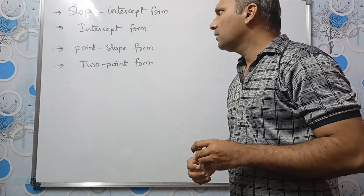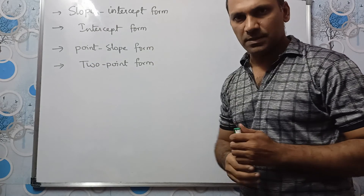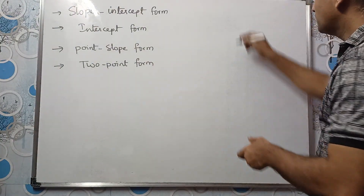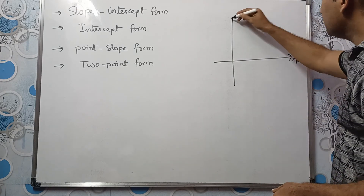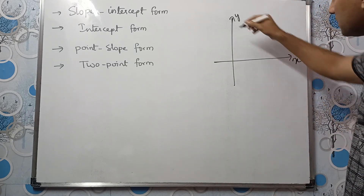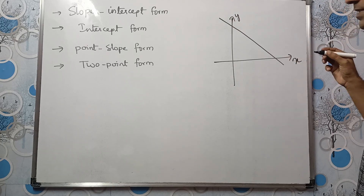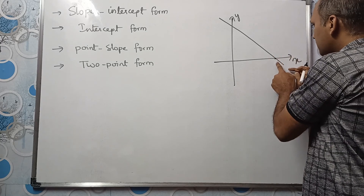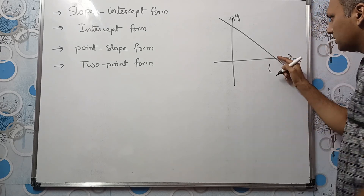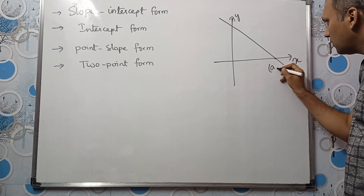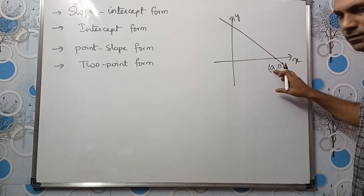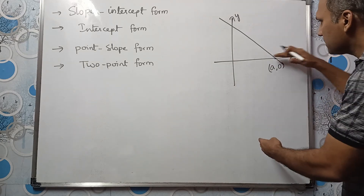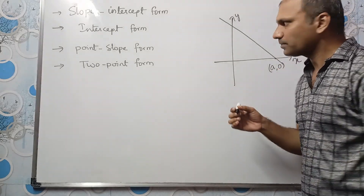Before starting this video, let me explain what intercepts are. This is our x-axis and this is our y-axis. Suppose we have a straight line like this. This line is intersecting the x-axis at some point, and this point will be of the form (a, 0). The value of x will be positive and the value of y will be 0 because on the x-axis, y equals 0.